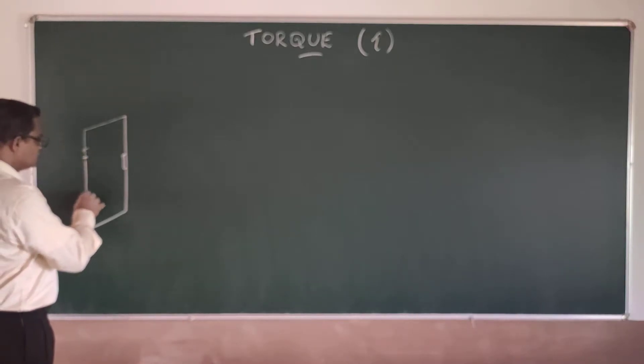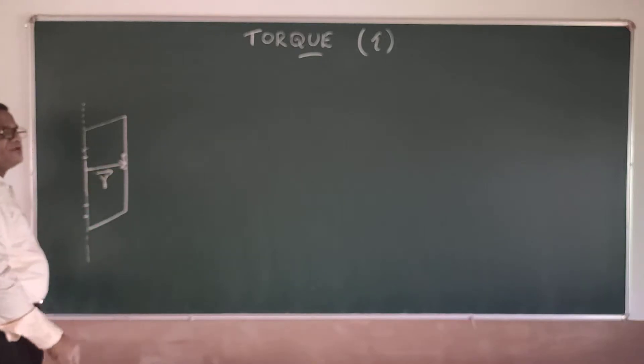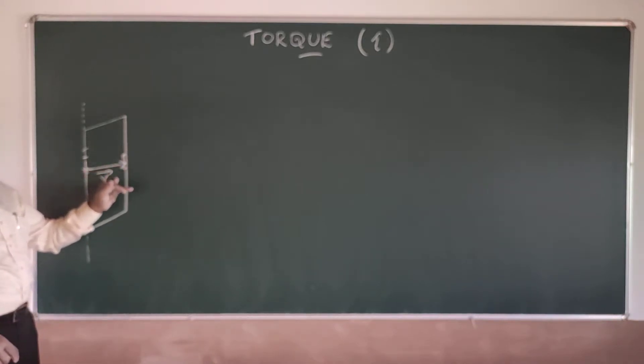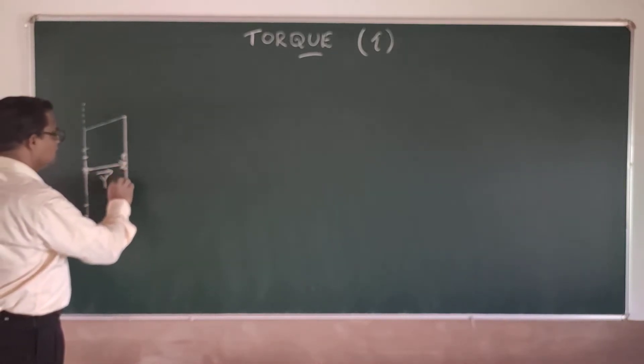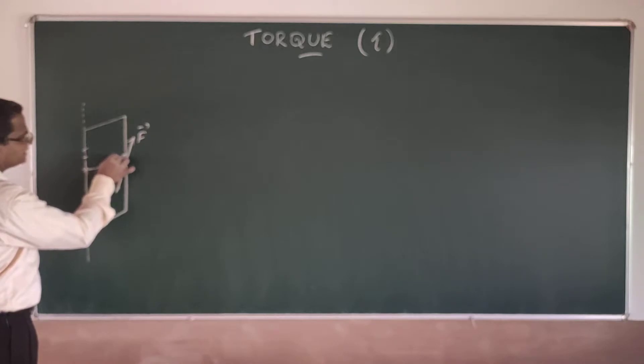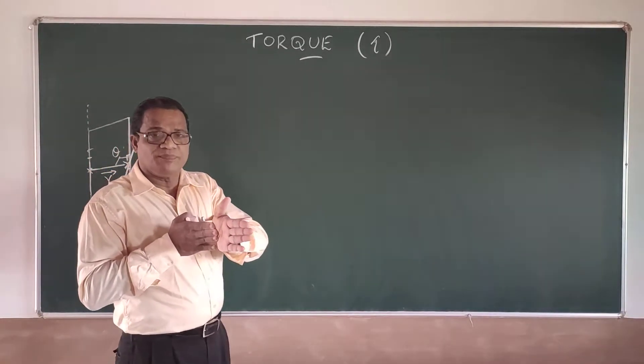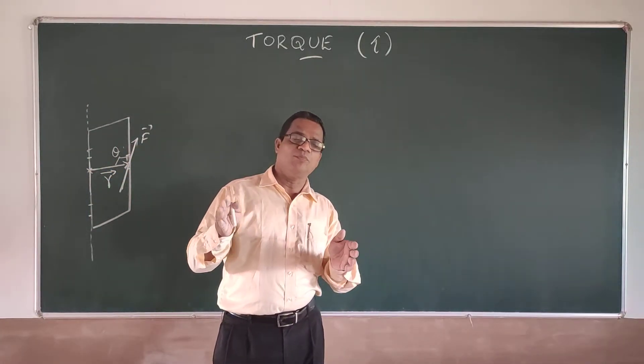So the torque effect which is coming along the axis depends on, suppose here is the point where I am applying force there. This distance is a function. From the fixed part to the part where I am applying force, that distance I am taking as R. And if I apply the force along this way into the plane, then I take the force direction like this and these two are at an angle theta. So theta is also very important because if you try to apply the force parallel to the plane of the door, it is not possible to open or close the door.